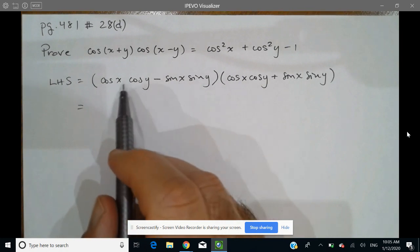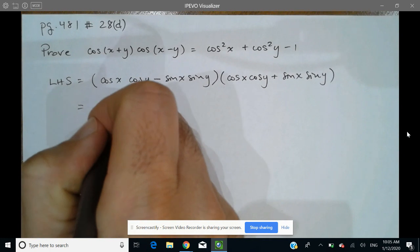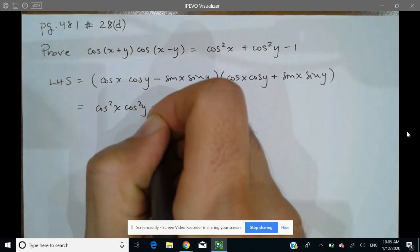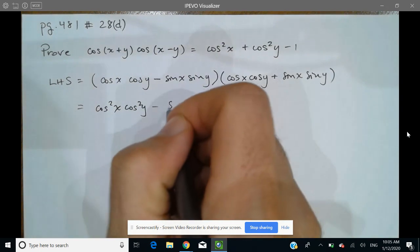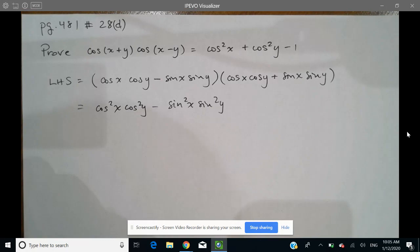So it's just a matter of multiplying the first two terms and the last two terms. That's going to give me cos squared x cos squared y and then minus, multiplying these two, sine squared x sine squared y.